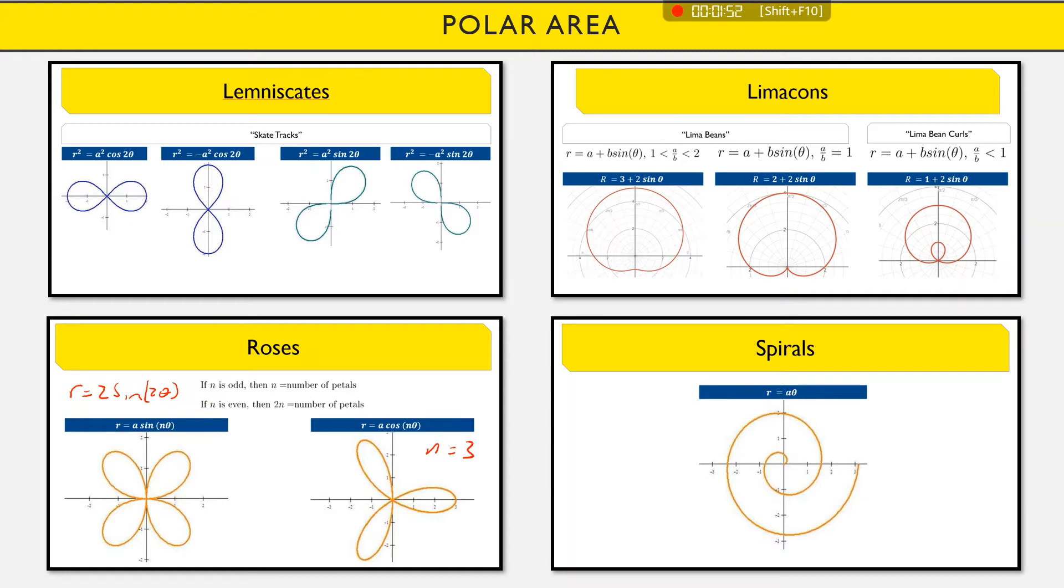Cool. If we're talking about a Limacon, a lot of times they'll ask you about either the inner loop or the outer loop when calculating area. So that's really what they're referring to, this inside part that you actually go over twice, or this outer part that you only cover once.